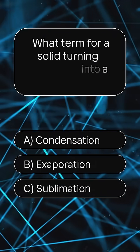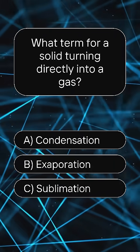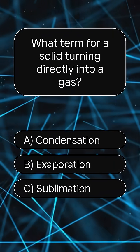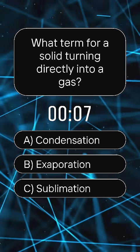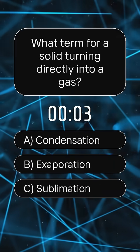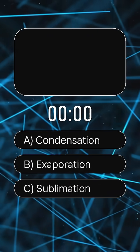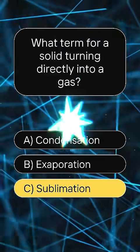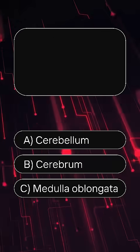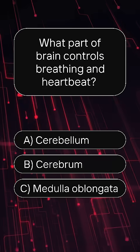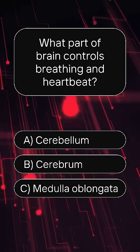What is the term for a solid turning directly into a gas? Answer: C, sublimation. What part of the brain controls breathing and heartbeat?